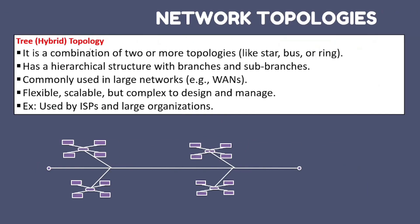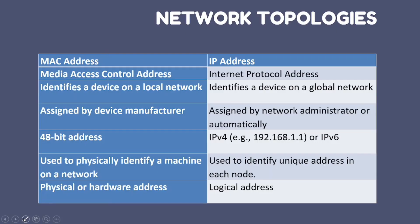Tree or hybrid topology is a combination of two or more topologies — typically a bus with star topologies inside it. It has a hierarchical structure with branches and sub-branches. It is commonly used in large networks, is flexible, and is mainly used by larger organizations. For topology, remember: diagram is very important, mention how the connection works, how data travels, and note advantages and disadvantages.